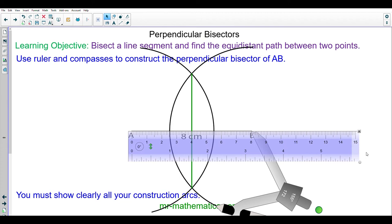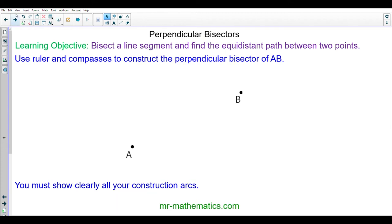Okay let's try the next question. We're going to use a ruler and a pair of compasses to construct the perpendicular bisector of two points AB and we're going to clearly show all our construction arcs. Do you want to pause the video for this construction and resume it when you're ready?